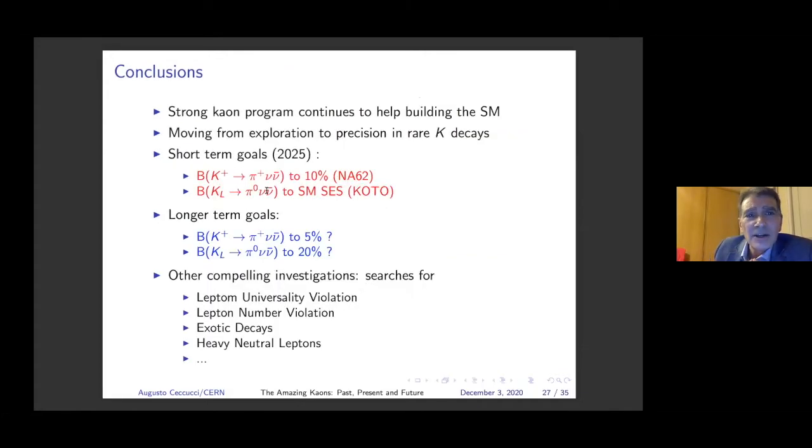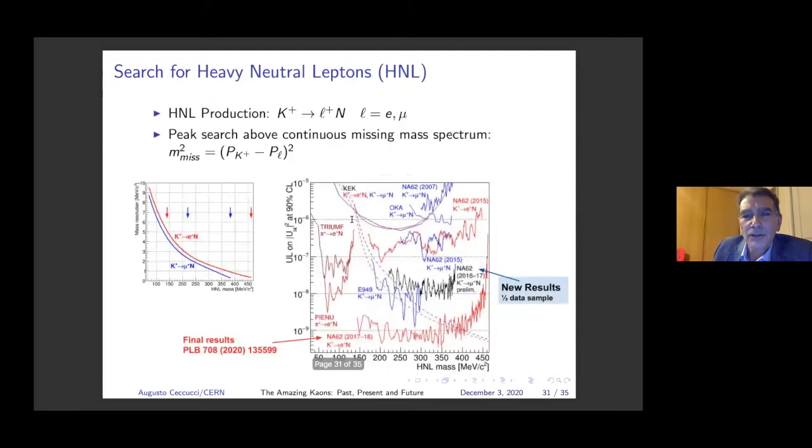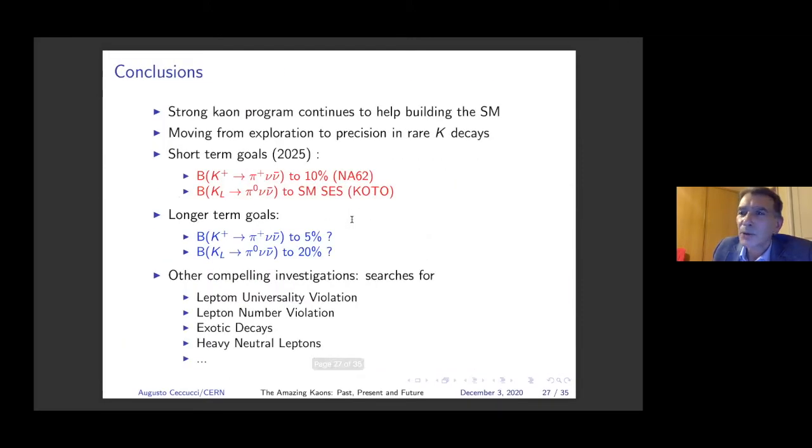In fact, perhaps NA62 could go well beyond 10% measurement, now it's 30% measurement, and that would require, however, to replace several detectors, and this would require a lot of effort. And there are plans, but for the time being, nothing is approved. So the strong kaon program continues. Hopefully, we'll continue to add pieces to the standard model. We're moving from exploration to precision in rare decays. The short-term goal is, by 2025, to reach a 10% measurement of K plus to pi plus nu nu-bar in NA62.